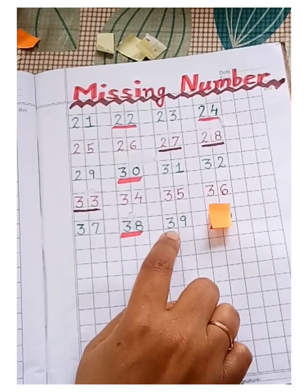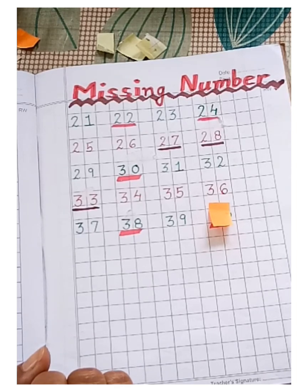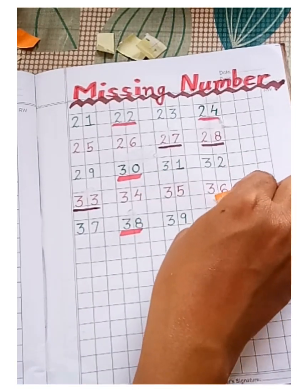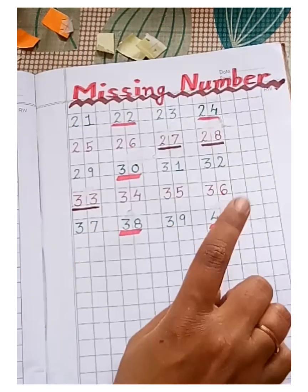Then, 39. Oh, again one number is missing. Let's find out. It's 40.